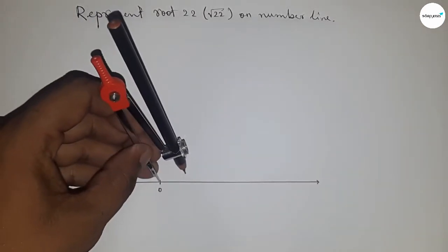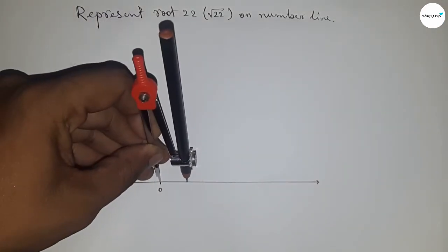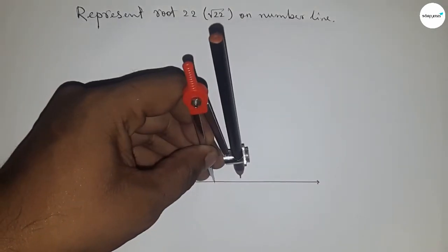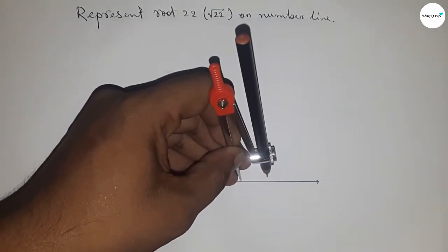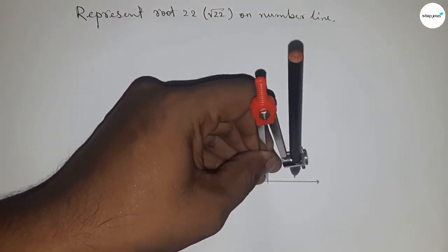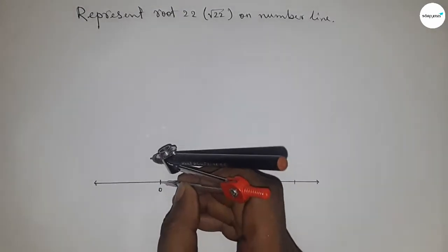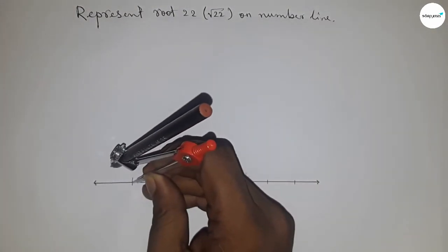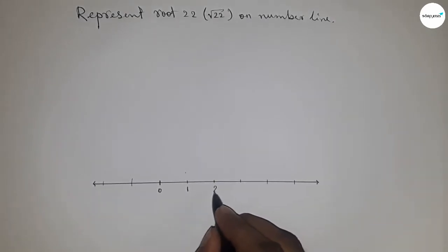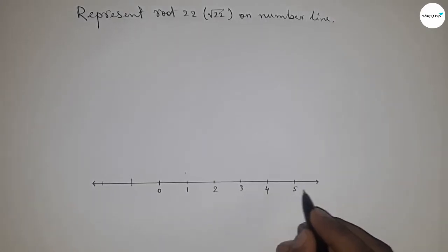Next, taking any length by compass and mark the line by this way, and this length is called unit length or one unit length. So marking the line by this way, so this is 1, 2, 3, 4, 5 and so on, and this side minus 1, minus 2 and so on.